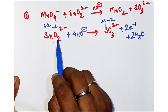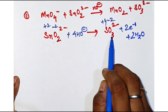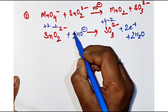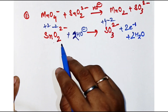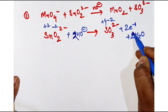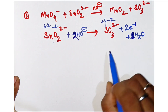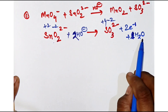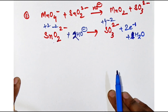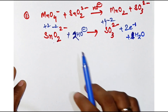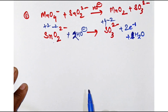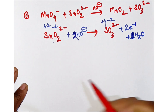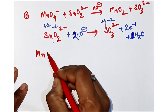Here there are only two oxygen and here it is three, so if I put 2OH⁻ it becomes four on this side, and if I put one molecule of water then it gets balanced — four oxygen forming. Hydrogen is also balanced: here it is two and here it is also two. So we go to the next equation.